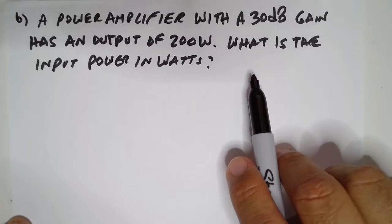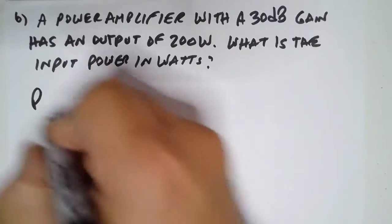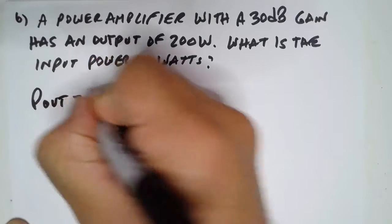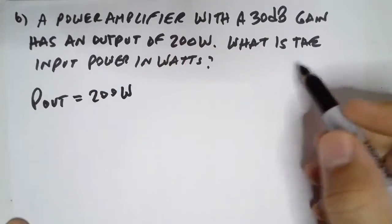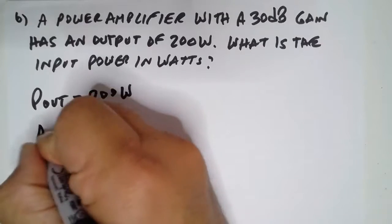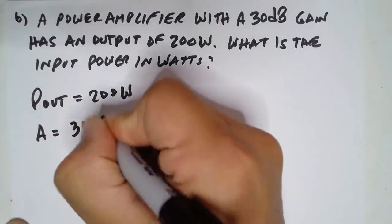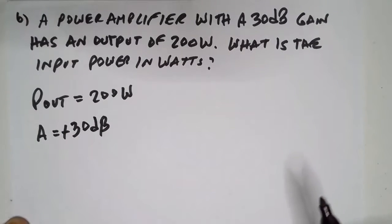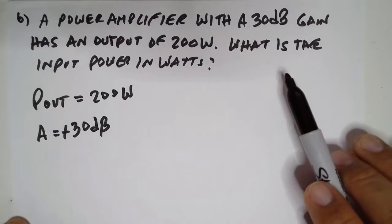A power amplifier with a 30 dB gain. First, P out equals 200 watts. The gain is 30 dB. Let's make that plus 30 dB for emphasis. What is the input power?